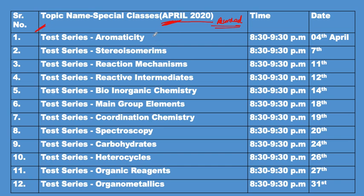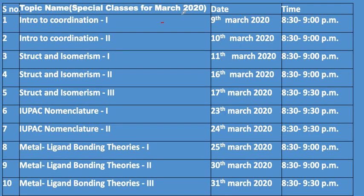The April test series covered topics like aromaticity, stereo isomerism, reaction mechanism, reactive intermediates, bio inorganic chemistry, main group elements, coordination chemistry, spectroscopy, carbohydrates, heterocycles, organic reagents, and organometallics. You will get a lot of previous year questions solved across all these topics. All the sessions are recorded for the month of April, and new upcoming sessions for May are also being added. I will keep updating you about June and July schedules as well.